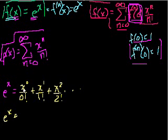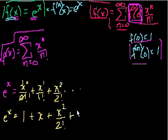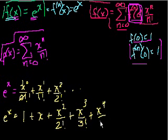So e to the x is equal to, x to the 0 is 1, 0 factorial I said in the last video is 1. So it's 1 plus, this is just x, plus x squared over 2 factorial, plus x to the third over 3 factorial, plus x to the fourth over 4 factorial. And you just keep going on forever. And that's e to the x.